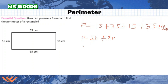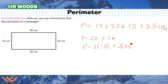Let's take a look here. Perimeter is equal to 2 times the height, which is 15, plus 2 times the width, which is 35. You see where I'm going with this? That is equal to 2 times 15, which is 30, plus 2 times 35, which is 70. And again, we get the same answer of 100 centimeters.